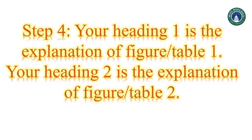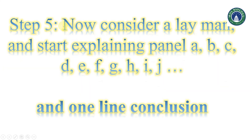In the results section, you are going to explain what has been represented in figure one, figure two, and so forth — that is the flow of your headings. In step five, consider a layman reader and start explaining panels A, B, C, D of figure one under your first heading. At the end, after discussing all panels — say A through J — add one concluding line summarizing what you get from figure one. That is the arrangement for explaining your results with logical structure.